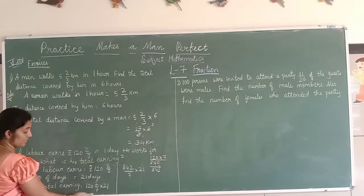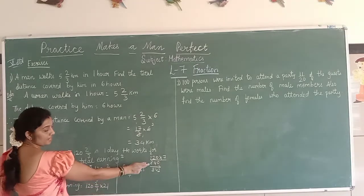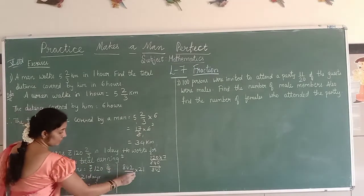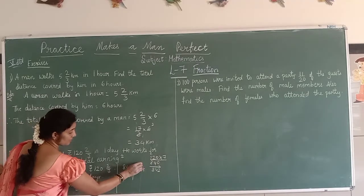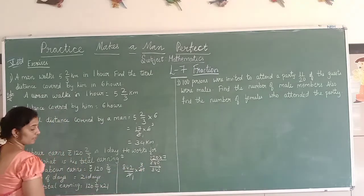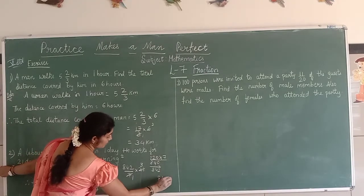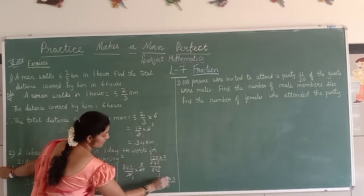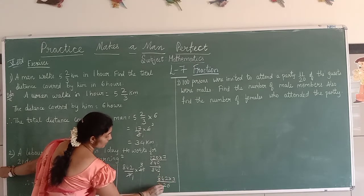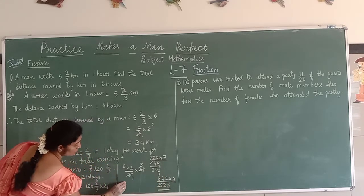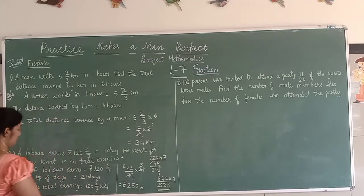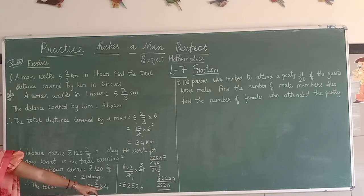120 times 7 gives 840, plus 2 becomes 842/7 into 21. Cancel 7 and 21 to get 842 into 3. 3 times 2 is 6, 3 times 4 is 12 carry 1, 3 times 8 is 24 plus 1 is 25. So he will earn totally rupees 2526.